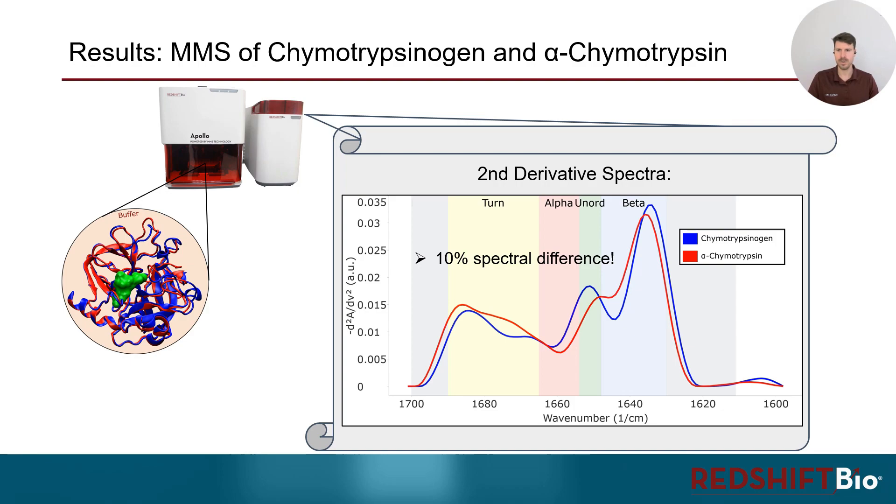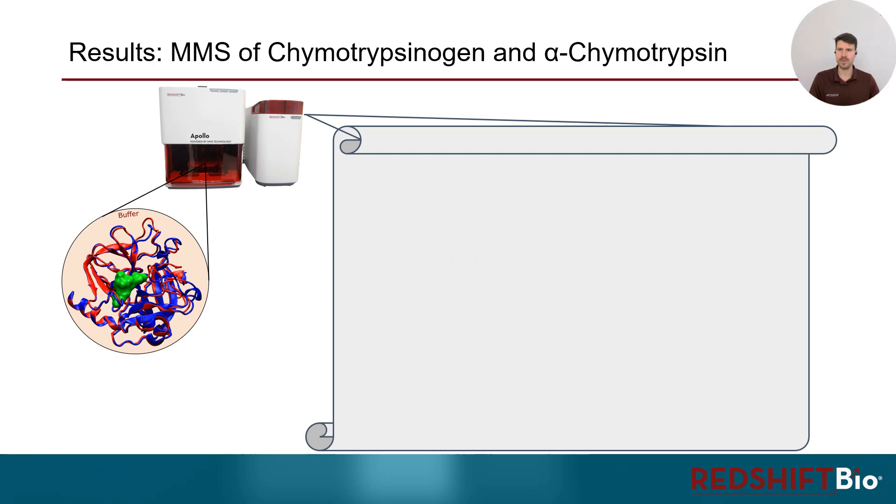Next, we decompose this observation into absolute changes in the higher-order structure. From Gaussian deconvolution integrated into the MMS software package, we can determine the absolute higher-order structure of the two proteins.